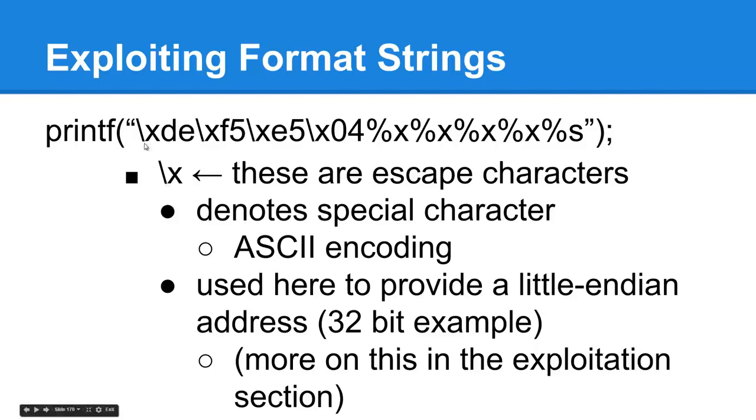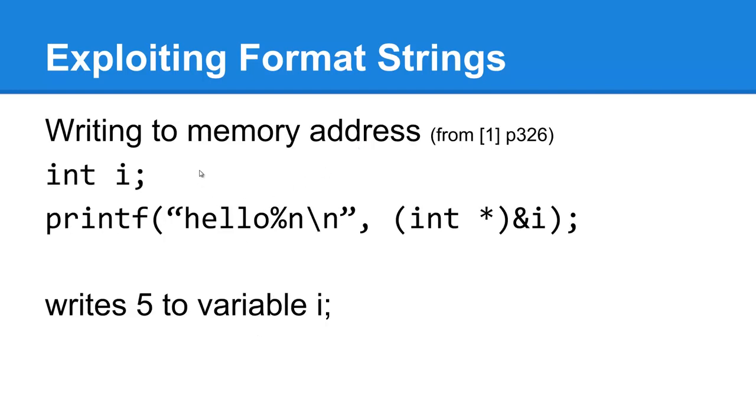A little background information if this example confuses you. Slash x denotes some escape character in ASCII encoding, and it is used here to encode the address here, which would otherwise be interpreted as just raw ASCII characters and not work the same way. Each one of these would take up a few bytes or so depending on the character width. This is a very common technique in exploitation, and it's one you're going to have to become very comfortable with. We've covered reading values, in fact, reading specific values at arbitrary locations. How about writing to a memory address? That's where the %n specifier comes in.